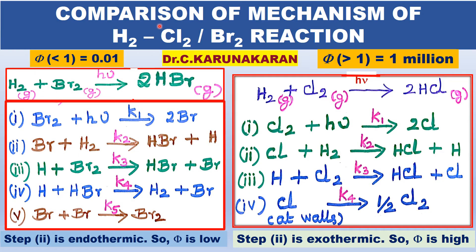In the last class, we studied the photochemical reaction between hydrogen and chlorine. Now we are studying the photochemical reaction between hydrogen and bromine. Comparing the two mechanisms, in H₂+Br₂, the hydrogen atom reacts with HBr because the HBr bond is weak, whereas in H₂+Cl₂, the hydrogen atom does not react with HCl because the HCl bond is strong. Therefore, that reaction does not occur.